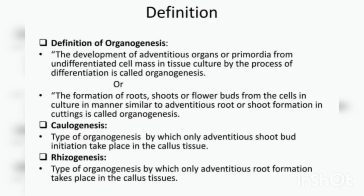Organogenesis has two subtypes: caulogenesis and rhizogenesis. Caulogenesis is where only the adventitious shoot bud is initiated from the callus tissue. Rhizogenesis means adventitious root formation takes place from the callus tissue. So caulogenesis means development of adventitious shoot and rhizogenesis is the formation of adventitious root.